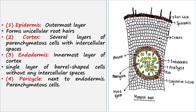Next to the epidermis we can see the cortex. This is the wide layer of cells. These cells are mainly parenchyma cells and they have intercellular spaces between them.